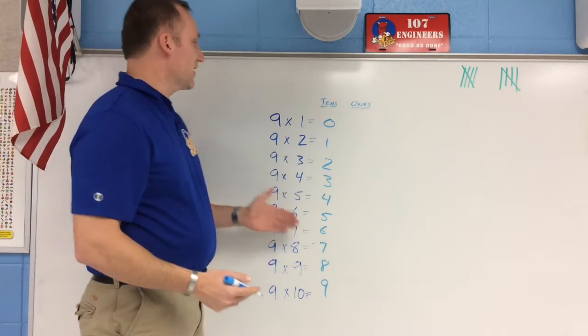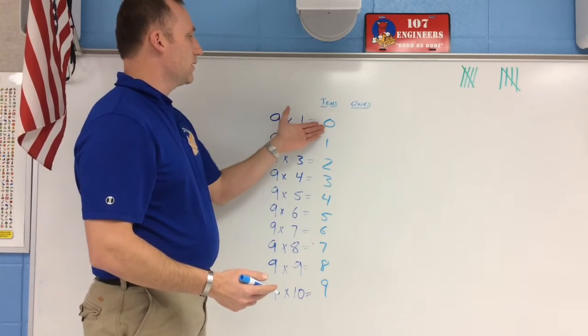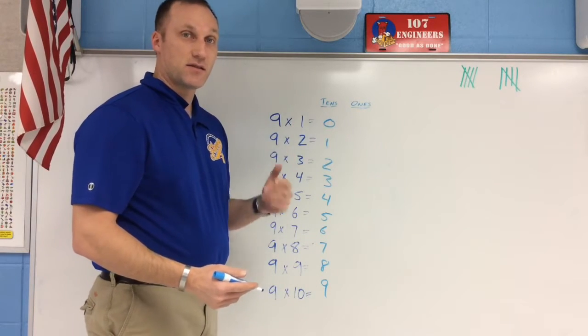So again, that is just the tens place. We know that 9 times 1 equals 9, so there's a 0 in the tens place.